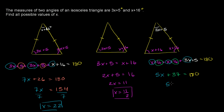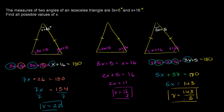Adding up the x terms: x plus x plus 3x gives 5x. And 16 plus 16 plus 5 gives 37. So 5x plus 37 equals 180. Subtracting 37 from both sides gives 5x equals 143. Dividing both sides by 5, we get x equals 143 over 5, which we can leave as an improper fraction. These are the three possible values of x given the information provided.